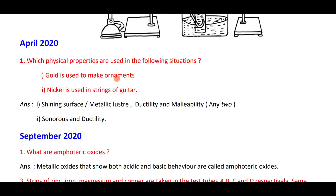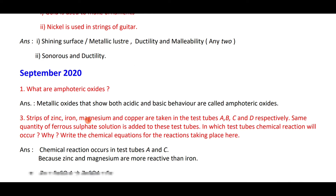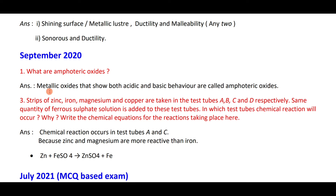Physical properties used: gold is used to make ornaments because of its shining surface, metallic luster, non-reactive nature, ductility and malleability. Nickel is used in guitar strings because of its sonorous and ductile property. Amphoteric oxides are metal oxides that show both acidic and basic behavior.